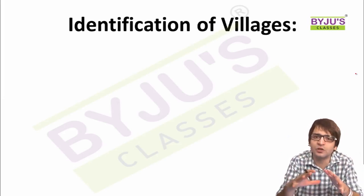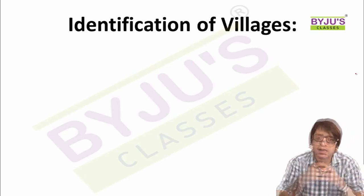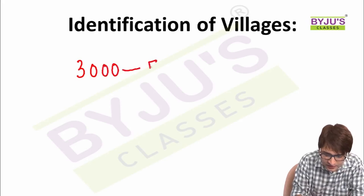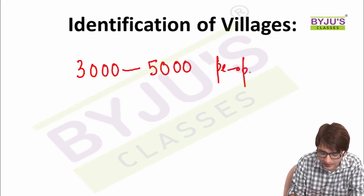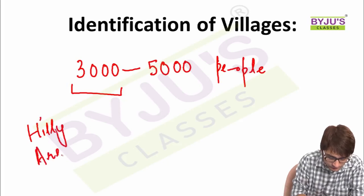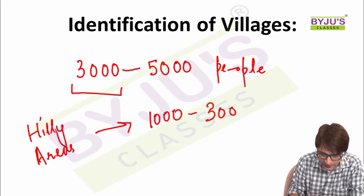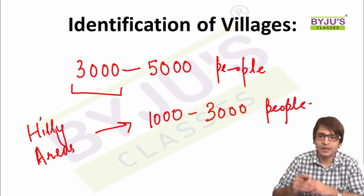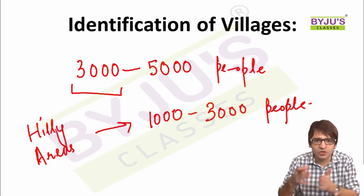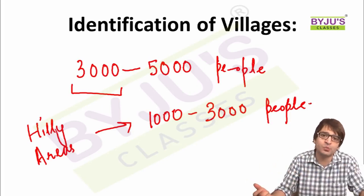Regarding the population of villages to be adopted under Sansad Adarsh Gram Yojana: if the village is located in the plains, the population must be in the range of 3,000 to 5,000 people. If the village is in hilly areas, the population must be between 1,000 and 3,000. Every MP — whether Lok Sabha, Rajya Sabha, or nominated — must adopt villages to transform them into Adarsh Grams.